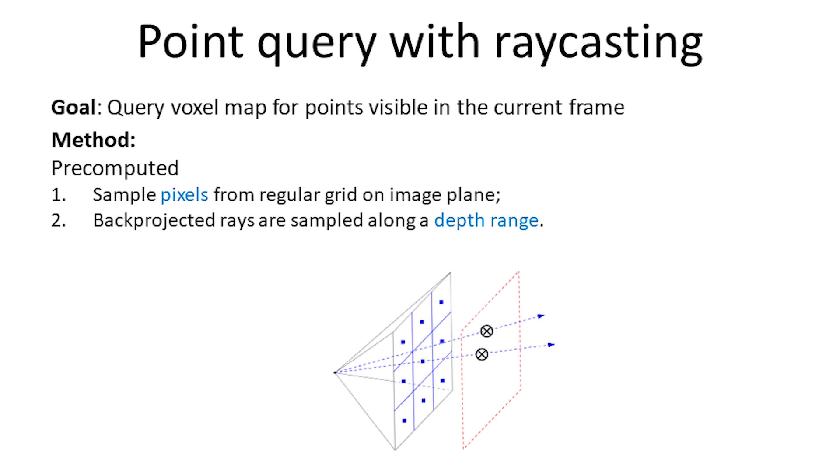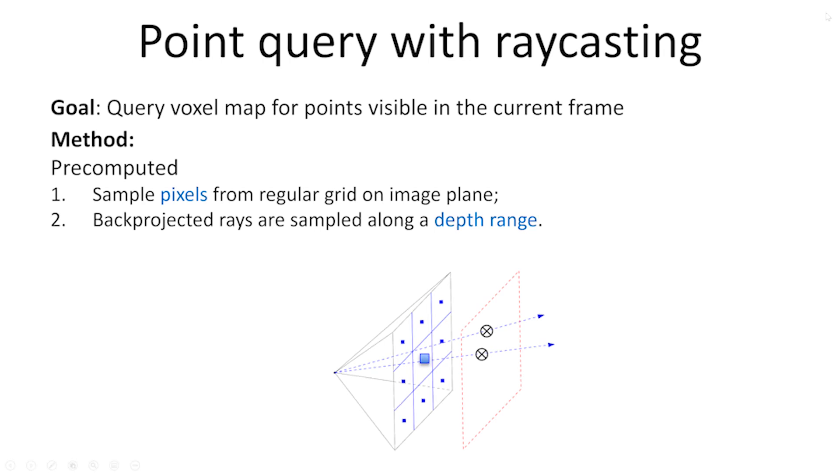We directly sample the frustum in a raycasting manner as follows. First, we sample pixels from a regular grid on the image plane. Their back propagation creates rays originating from the camera center, passing through the pixel. For each ray, we sample points along a depth range. This is in the camera frame and is pre-computed offline.